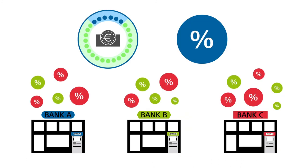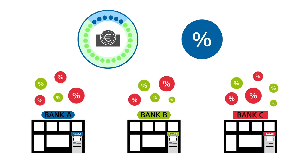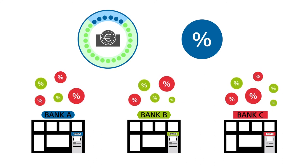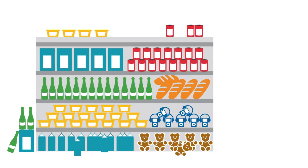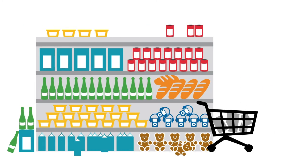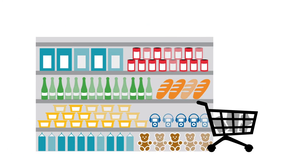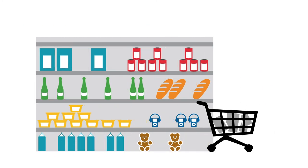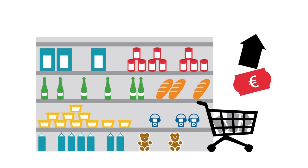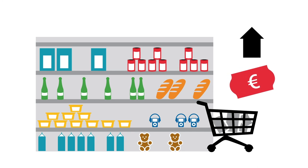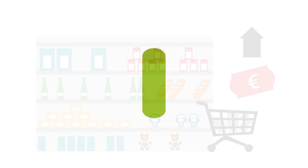Conversely, falling interest rates lead to an increased appetite for credit and reduce the incentive to save. The level of demand in the economy thus increases, which tends to make prices go up faster.